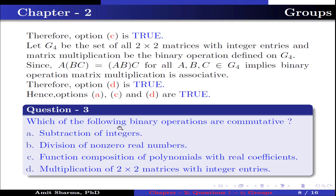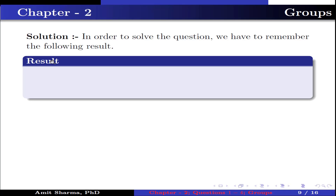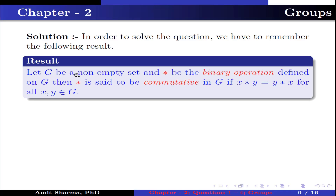Question number 3: Which of the following binary operations are commutative? Option A: subtraction of integers. Option B: division of non-zero real numbers. Option C: function composition of polynomials with real coefficients. Option D: multiplication of 2×2 matrices with integer entries. In order to solve the question, we have to remember the following result: let G be a non-empty set and star be the binary operation defined on G. Then star is said to be commutative in G if x★y = y★x for all x, y belonging to G.